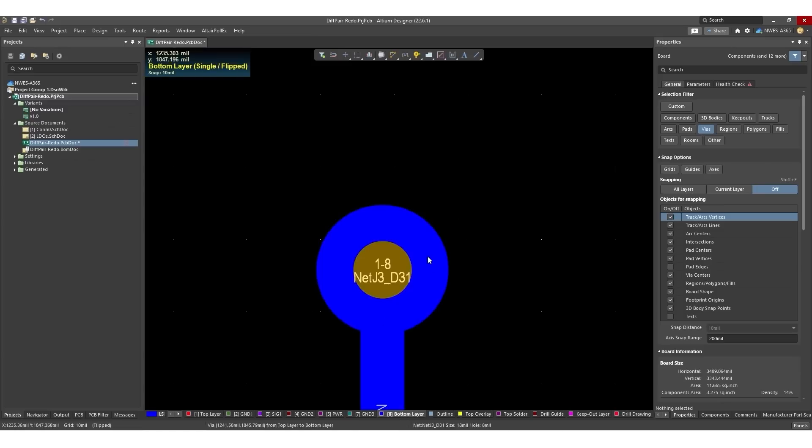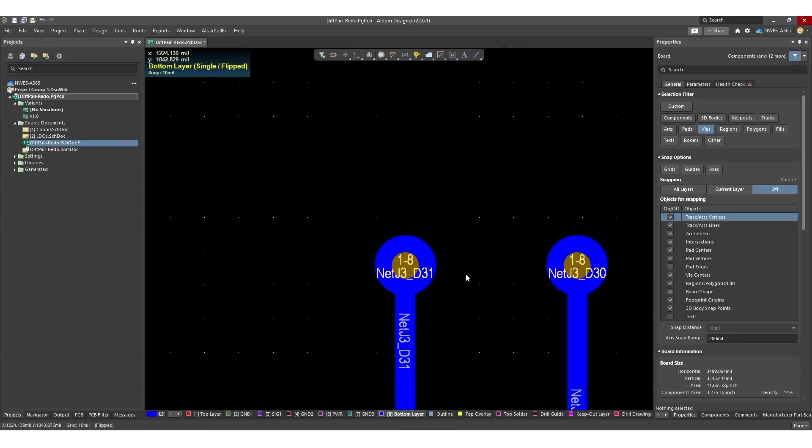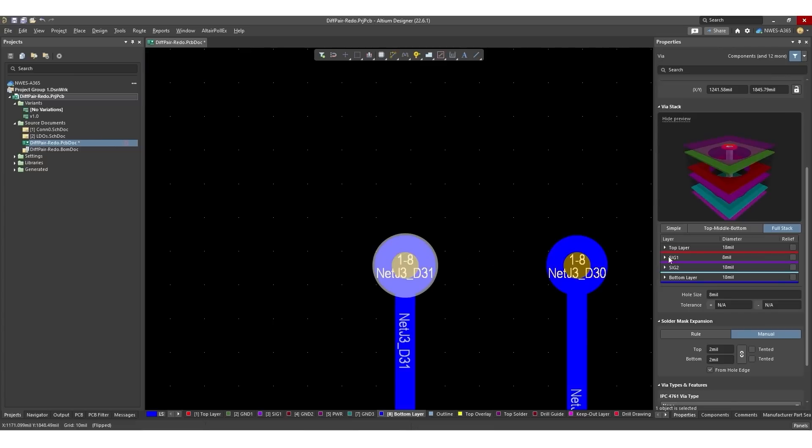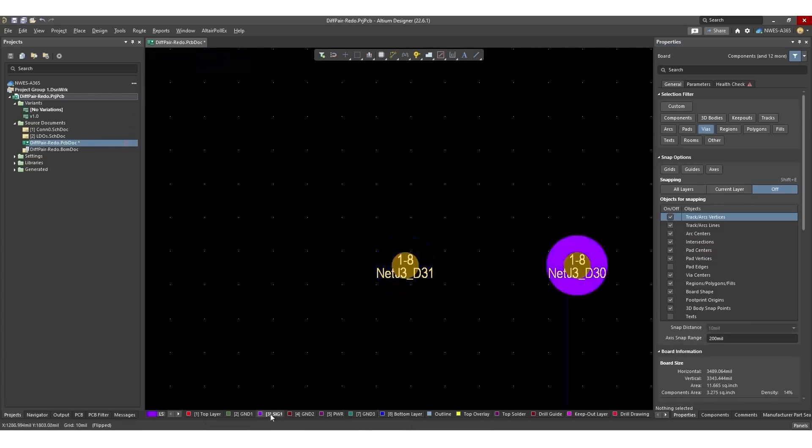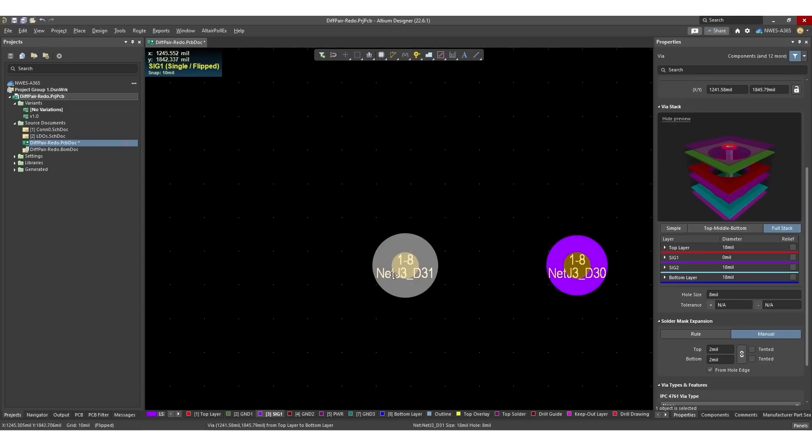And then we have our hole on the internal layer with no pad. And then you see here down on the bottom layer, we still have the landing pad with the trace coming off of it. So it really is as simple as that you just go over to full stack, set the diameter. If you want, you can even set the diameter to zero. And of course, it's just going to leave the hole here in the PCB layout in this internal layer.